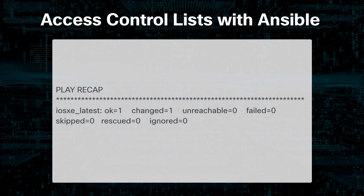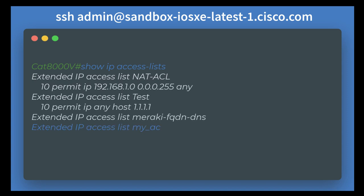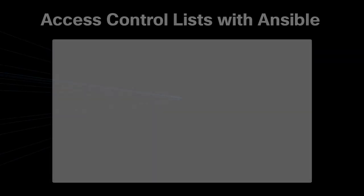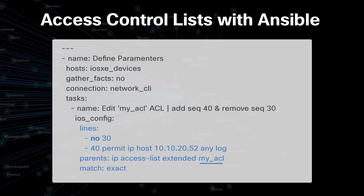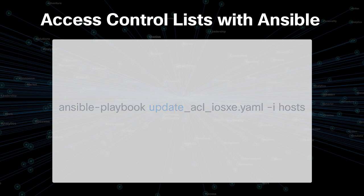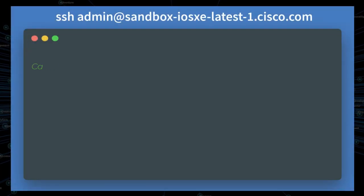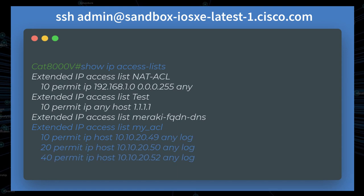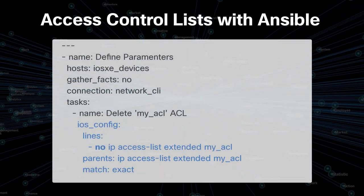We can SSH into the device to verify. The output from the show ip access-list command tells us the access list was created as per our specifications. If we want to update our ACL — say, remove the line 30 entry and add a line 40 entry — we can create a similar playbook naming it update_acl_ios_xe.yaml and referencing my-acl. The output from Ansible tells us that was a success as well. The line 30 entry is gone and we have a line 40 added. Finally, we can delete the ACL with a separate playbook.